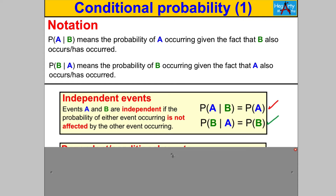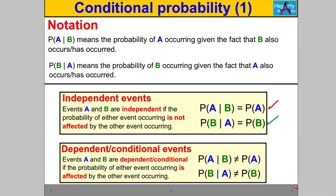On the other hand, with dependent or conditional events, something else is true. Events A and B are dependent or conditional if the probability of either event occurring is affected by the other occurring. In this scenario, the probability of A happening given B has happened is not just the probability of A anymore — it has changed. Similarly, the probability of B given A can't just be the probability of B anymore; it's something else we have to calculate.